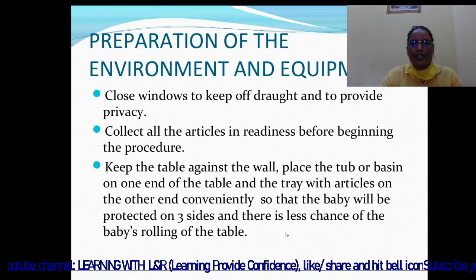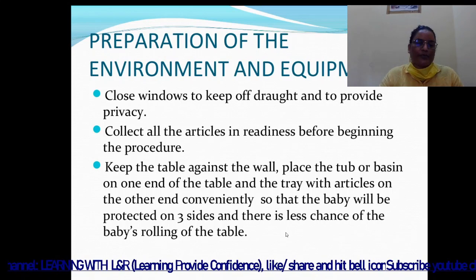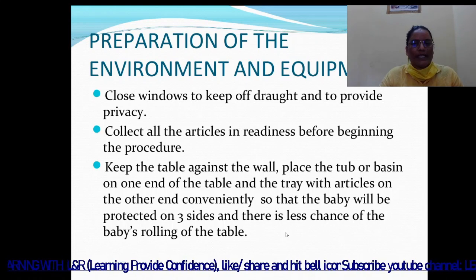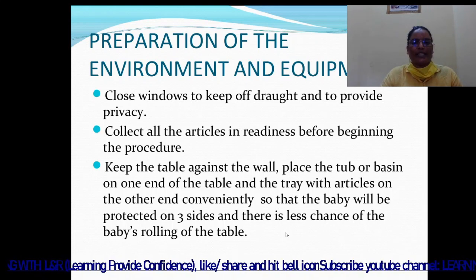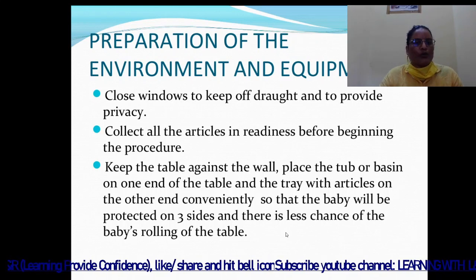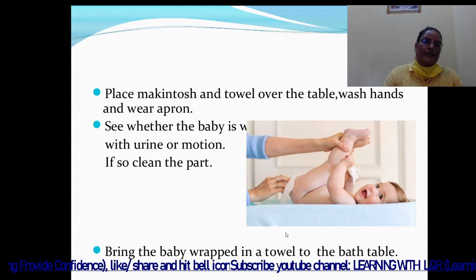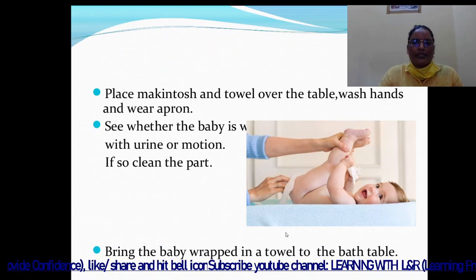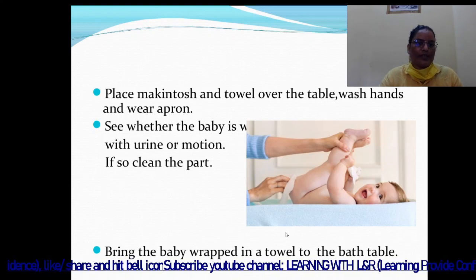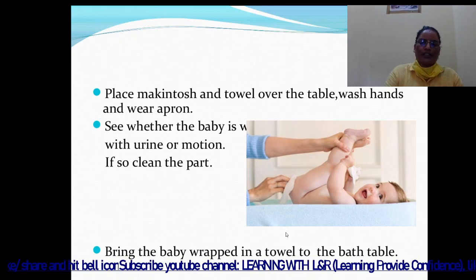Preparation of the environment and equipment: close windows to keep out dirt and to maintain privacy. Collect all articles in readiness before beginning the procedure. Keep the table against the wall. Place the tub or basin on one end of the table and the tray with articles on the other end conveniently, so that the baby is protected on three sides and there is less chance of rolling. Place a mackintosh towel over the table. Wash hands and wear an apron. Check whether the baby has urine or motion; if so, clean before the bath. Bring the baby wrapped in a towel to the bath table.